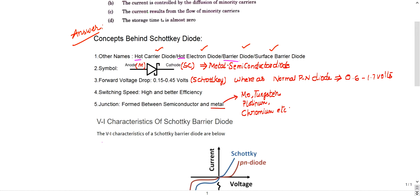The symbol is the same as a diode, but instead of a straight line there is an 'S'-shaped symbol indicating Schottky. Compared to a PN junction diode symbol, the Schottky diode symbol has that distinctive 'S' marking, which is how you distinguish them visually.